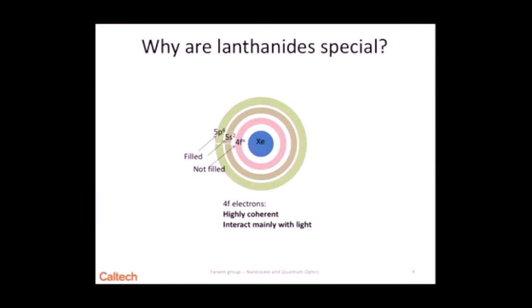For quantum optics, these are very good because the 5s and 5p orbitals actually shield the 4f orbital. Basically, these 4f electrons kind of sit like in a Faraday cage, such that they are isolated from the environment, and you can preserve their quantum states for a longer time.